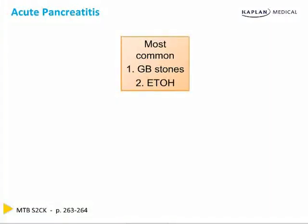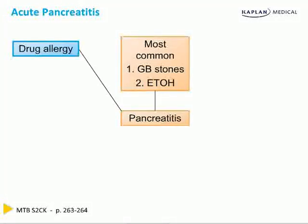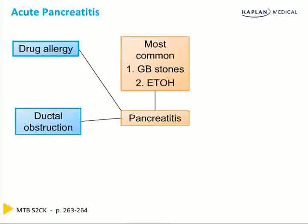The two most common causes of pancreatitis in the United States are gallbladder stones and alcoholism. Drug allergy is another important cause. Sulfa drugs such as furosemide and hydrochlorothiazide have been implicated. Ductal obstruction secondary to ERCP or cystic fibrosis is also common.